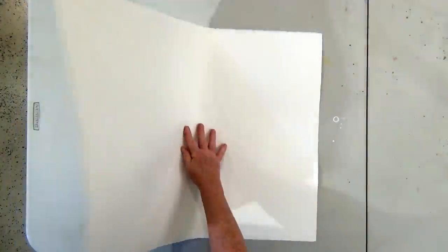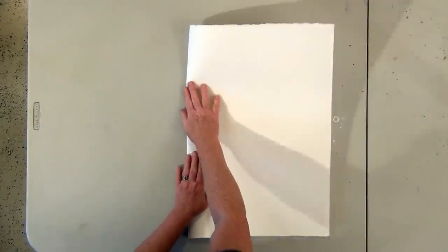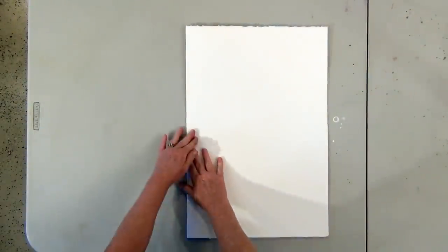I'm going to do this three or four times so that that fold becomes almost a break in the paper. Rub it firmly.